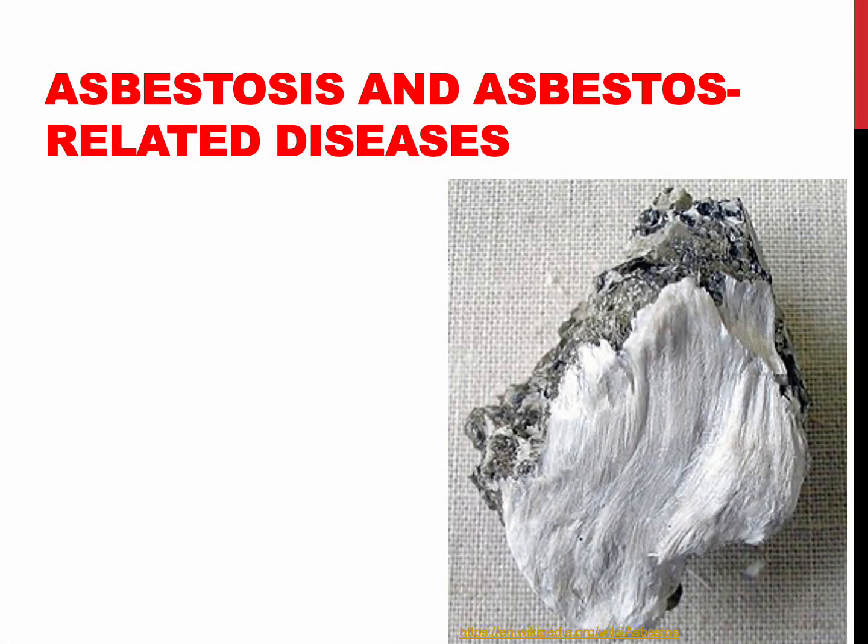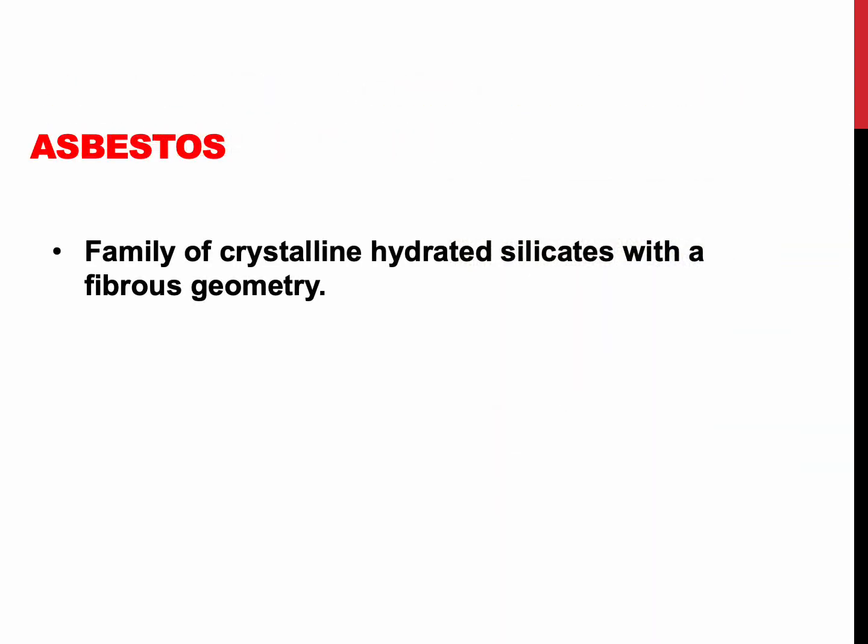Asbestos is the third mineral dust associated with pneumoconiosis. It is a family of crystalline hydrated silicates with a fibrous geometry and is one of the mineral dusts that can cause pneumoconiosis. Other common mineral dusts, as discussed before, are coal dust and silica, and exposure usually happens in the workplace.